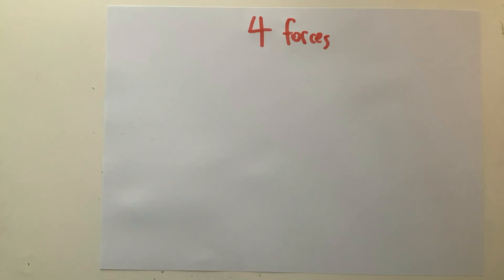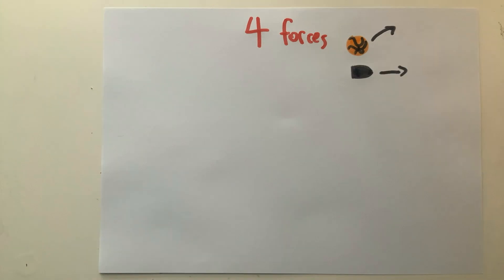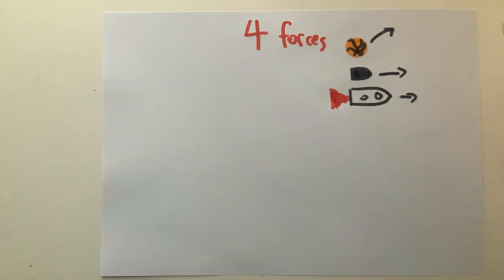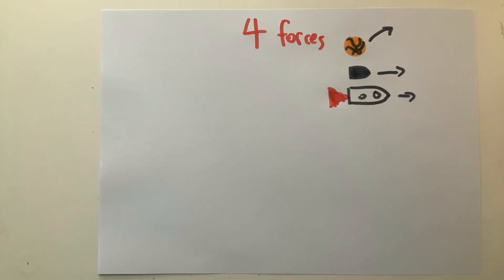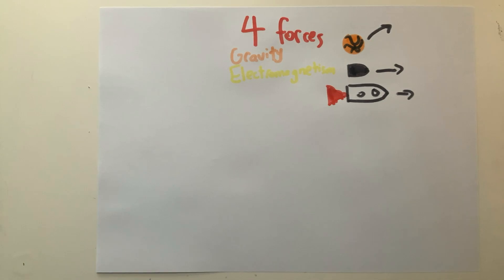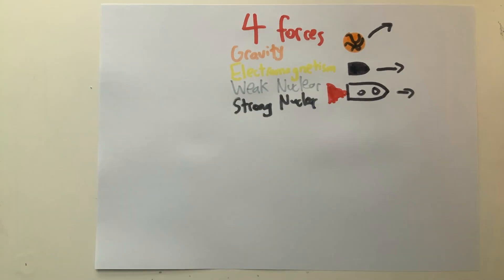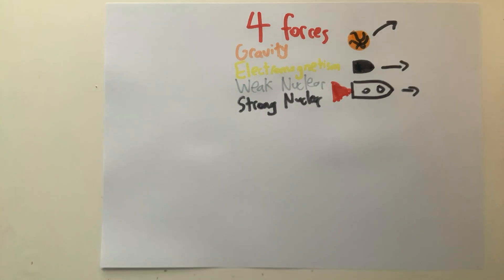In nature, every interaction can be boiled down to four basic fundamental forces. Whether it's shooting a basketball, shooting a bullet, or shooting a rocket, all actions can be described by four underlying building blocks. The four forces are gravity, electromagnetism, the strong nuclear force, and the weak nuclear force. We'll explain more about them in more detail later, but let's get a basic overview.